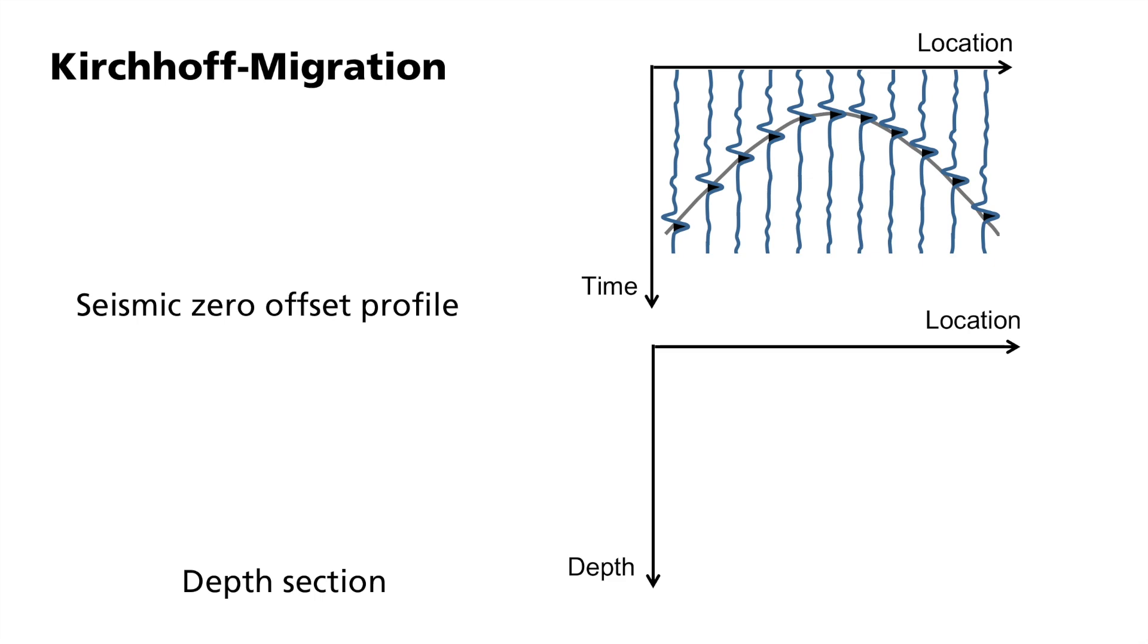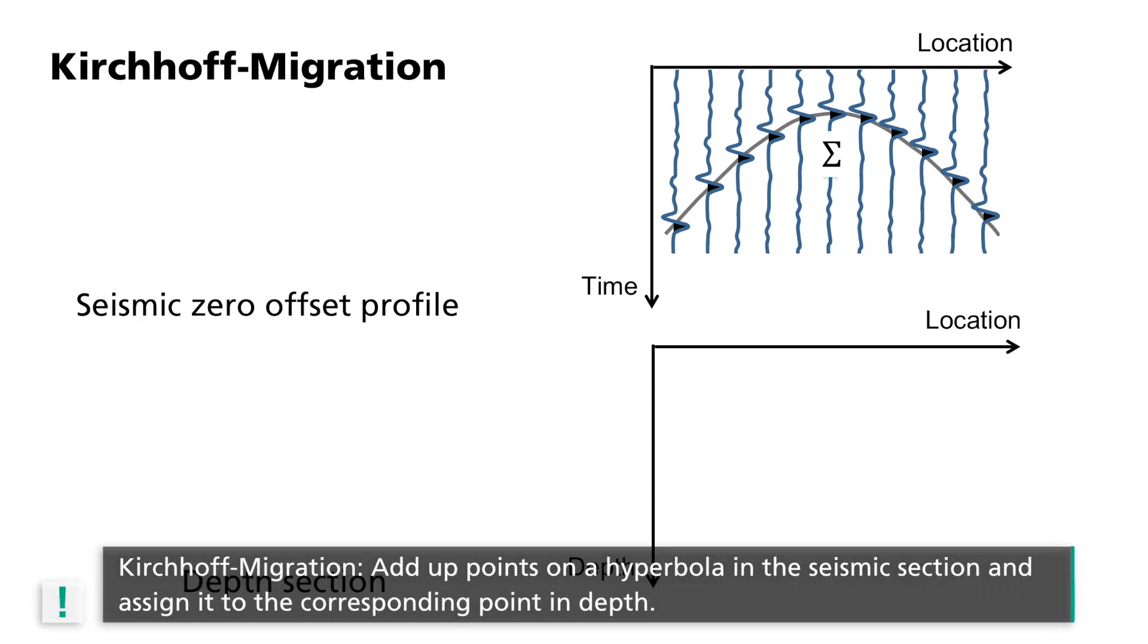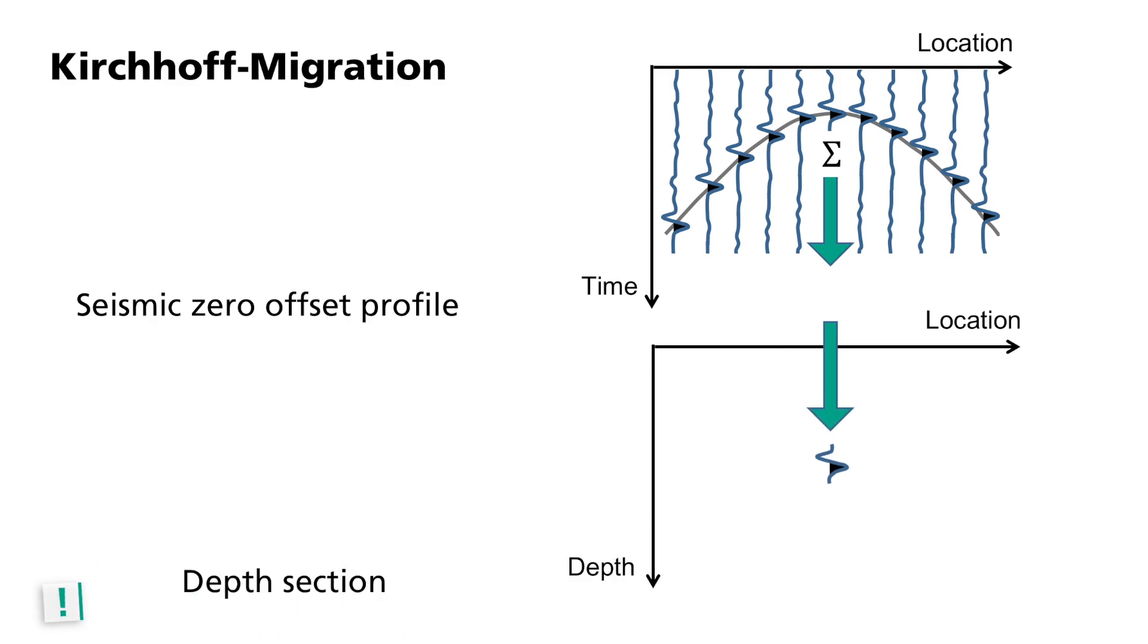All the points of the seismic profiles that lie along a hyperbola result from a single point-reflector in the subsurface. If we want to find the origin of this hyperbola in the subsurface, we add up all the signals along this hyperbola. The sum is then assigned to the corresponding diffractor in the depth section. This point is called the apex. For each individual point in depth, the corresponding hyperbolic curves in the seismic profiles are selected and summed.